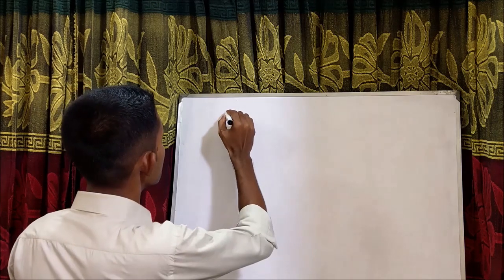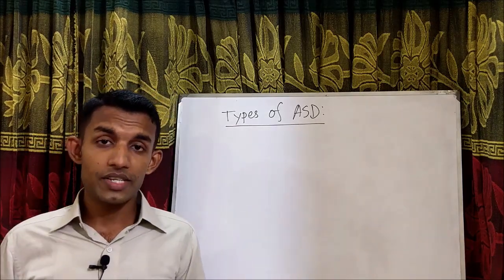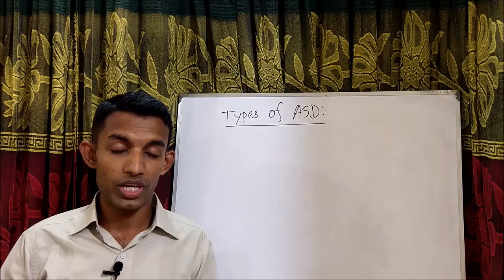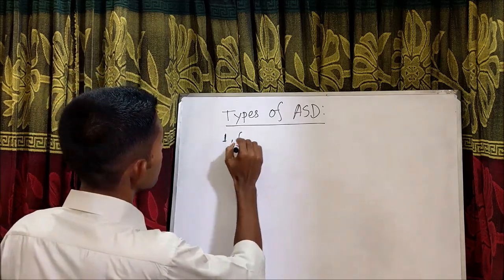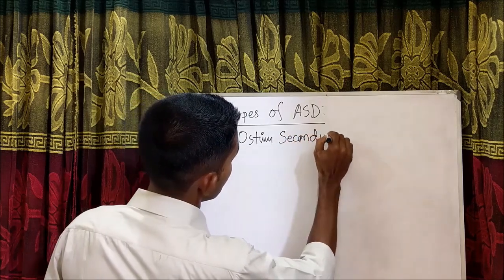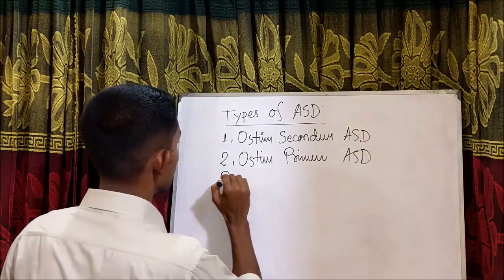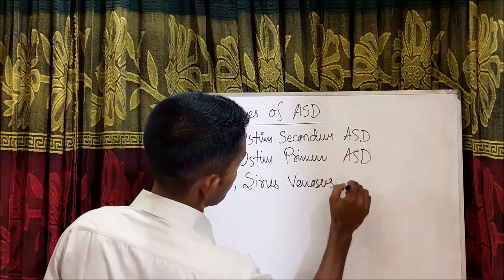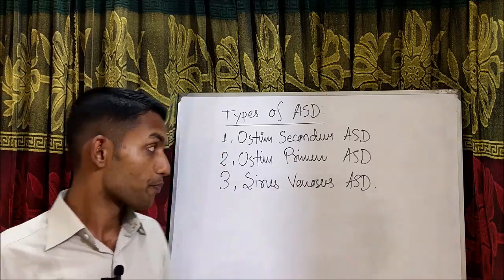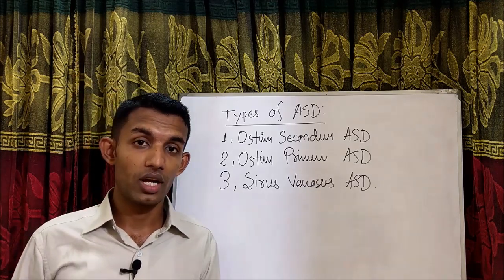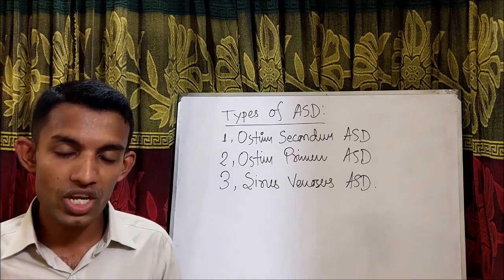There are several types of ASD, but three are major: ostium secundum ASD, ostium primum ASD, and sinus venosus ASD. Among these three, ostium secundum ASD is the most common. To understand why, we need to look at the embryological explanation. To understand the types of ASD, we need to see from its embryological point of view.